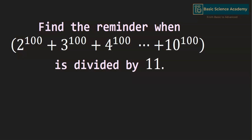Here we're going to find the remainder when this number is divided by 11. Since 11 is a prime number and none of 2, 3, 4 up to 10 is a multiple of 11, we can use Fermat's Little Theorem to find the remainder.